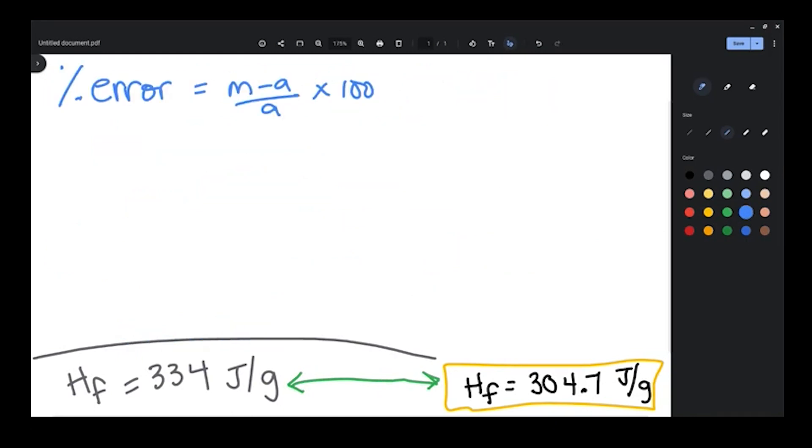This is the percent error equation. And in this case, you take your measured value, which for us was 304.7, subtract the accepted value of 334, divide that by, again, the accepted value of 334, and we're going to multiply this whole thing by 100. This should not come out to be a negative. It's really an absolute value. Many of us don't include that when we write the equation. Couldn't tell you why. When I complete my entire calculation, I am left with a percent error of 8.77, which is possibly the smallest percent error that I have ever seen for this lab.